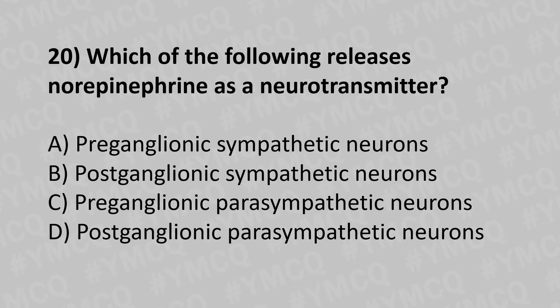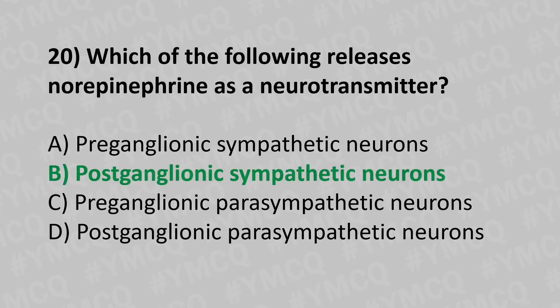Moving to our twentieth question. Which of the following releases norepinephrine as a neurotransmitter? Option A: preganglionic sympathetic neurons. Option B: postganglionic sympathetic neurons. Option C: preganglionic parasympathetic neurons. Option D: postganglionic parasympathetic neurons. And the answer is option B: postganglionic sympathetic neurons.